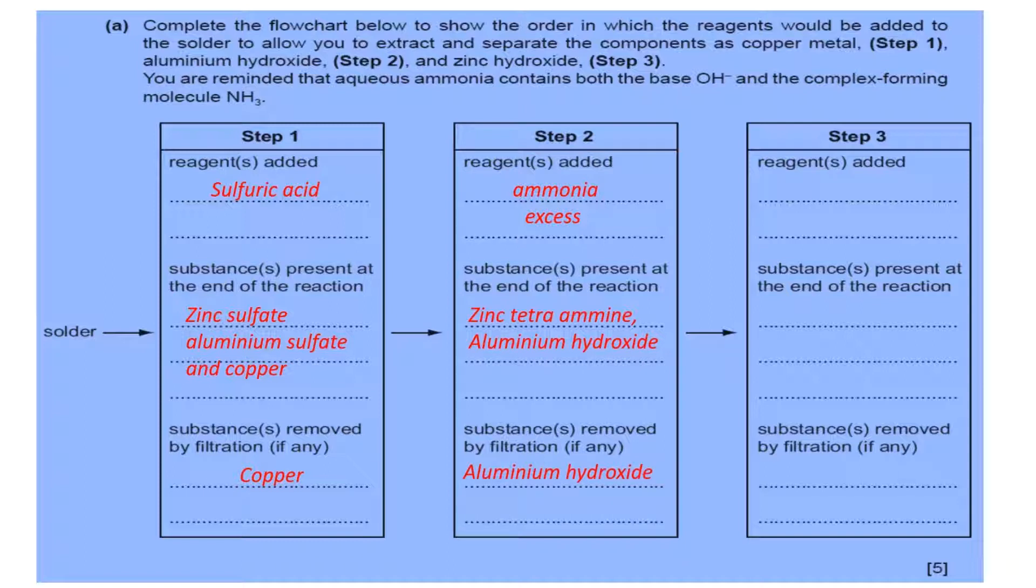The third step, we can use sulfuric acid again. This sulfuric acid reacts with ammonia and makes ammonium sulfate, which is present in zinc, and zinc hydroxide precipitate is produced. This precipitate can be separated by filtration.